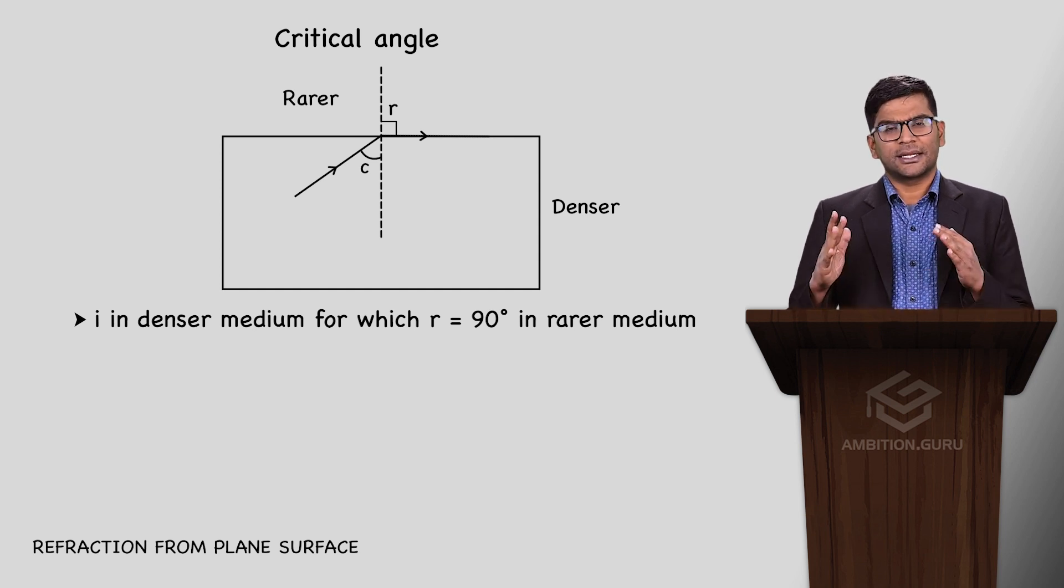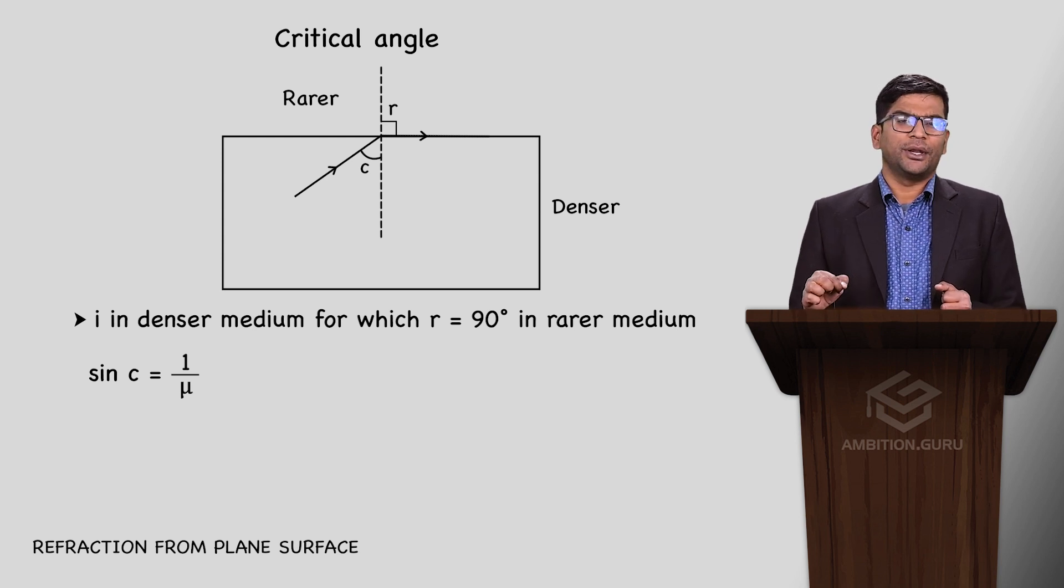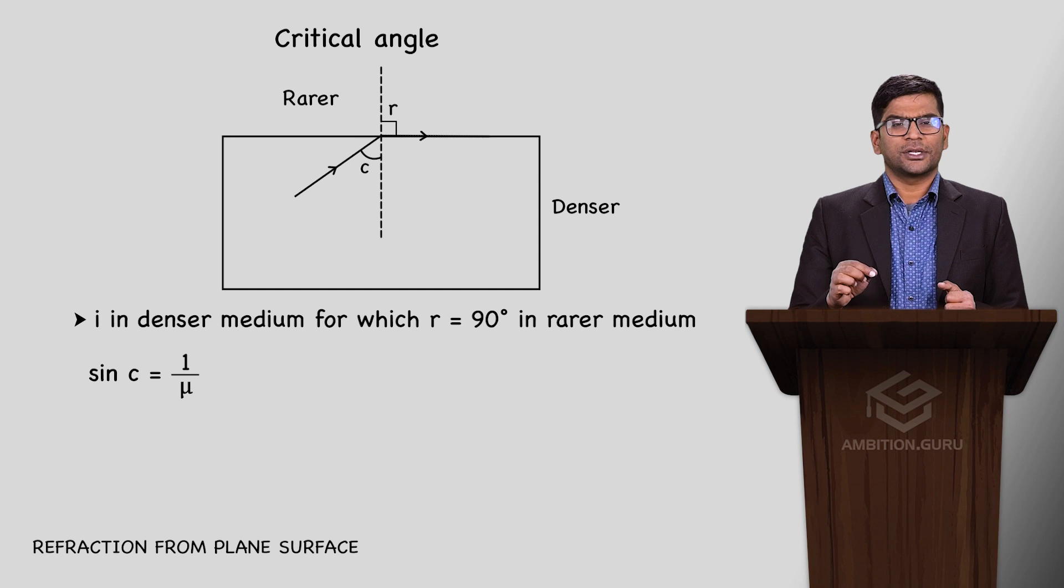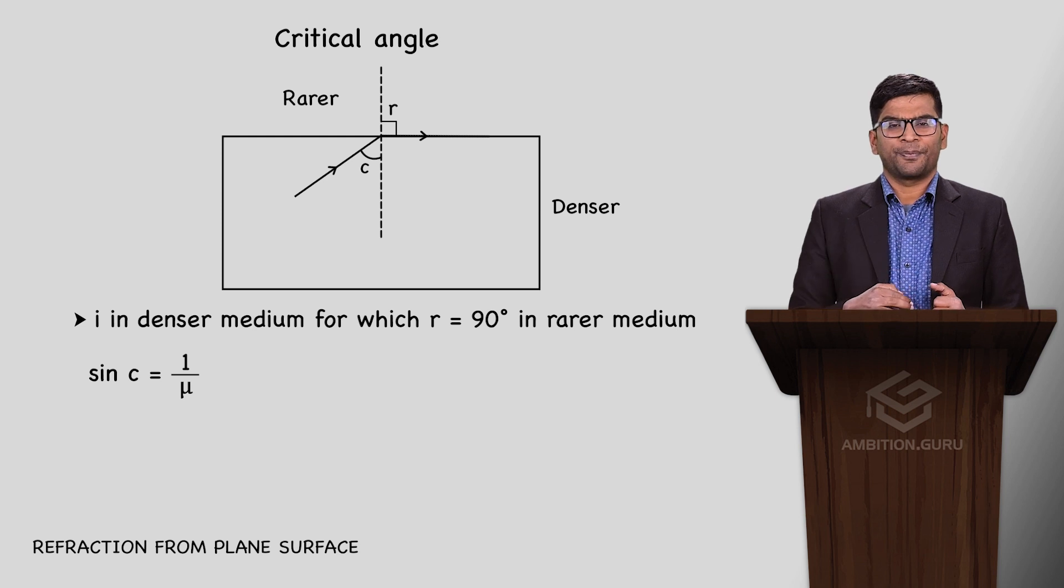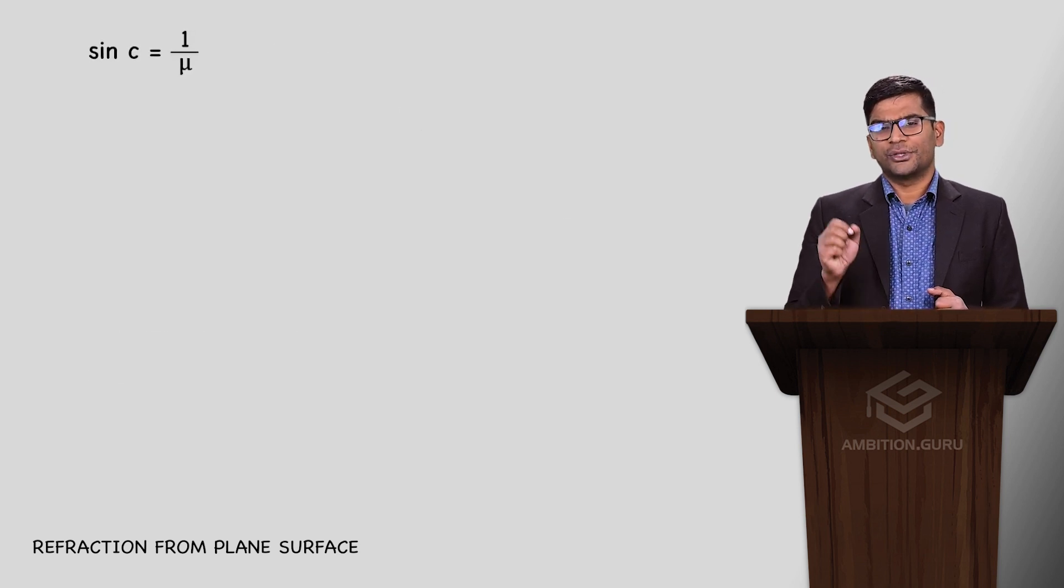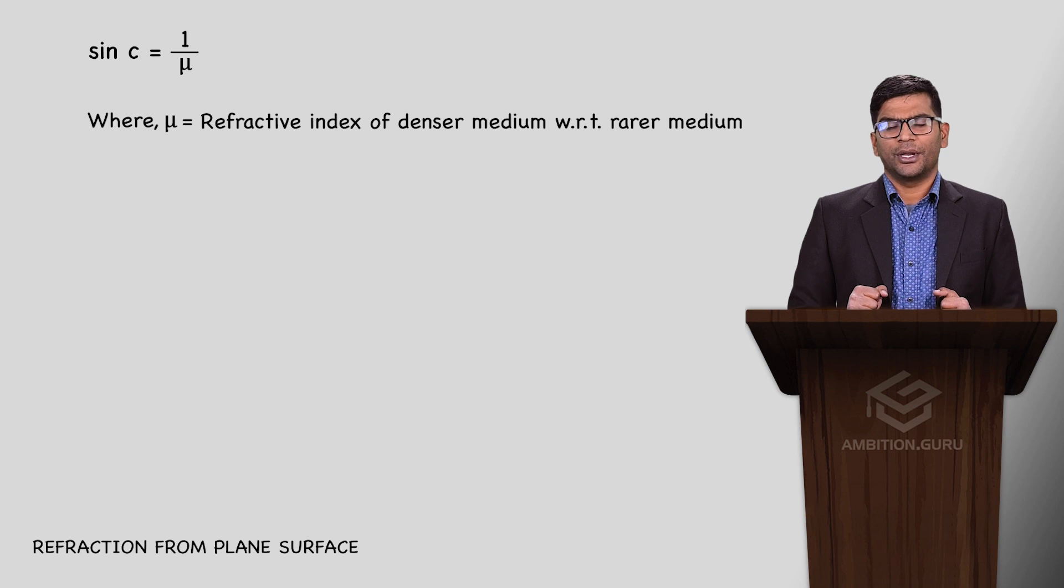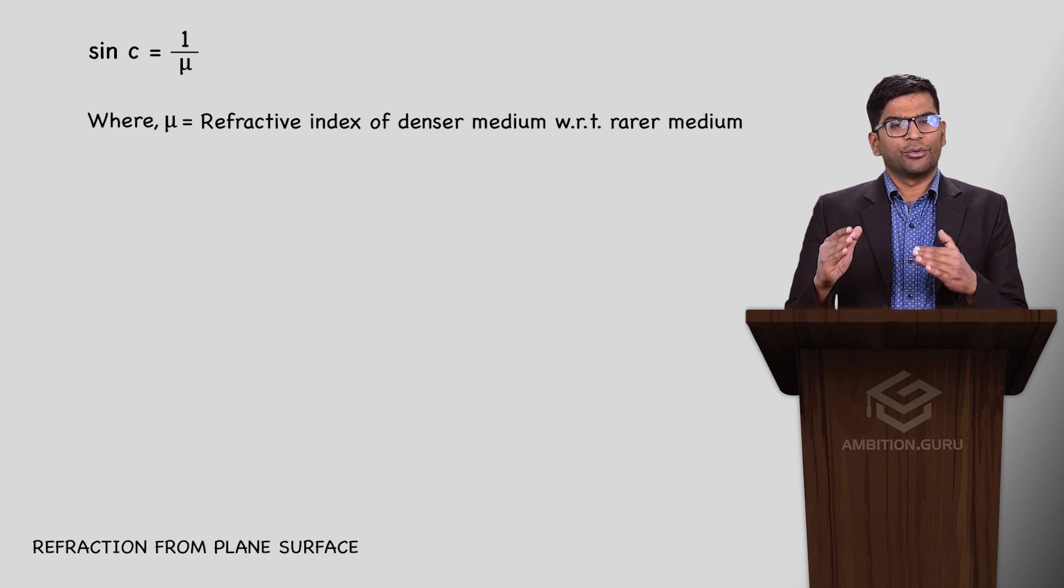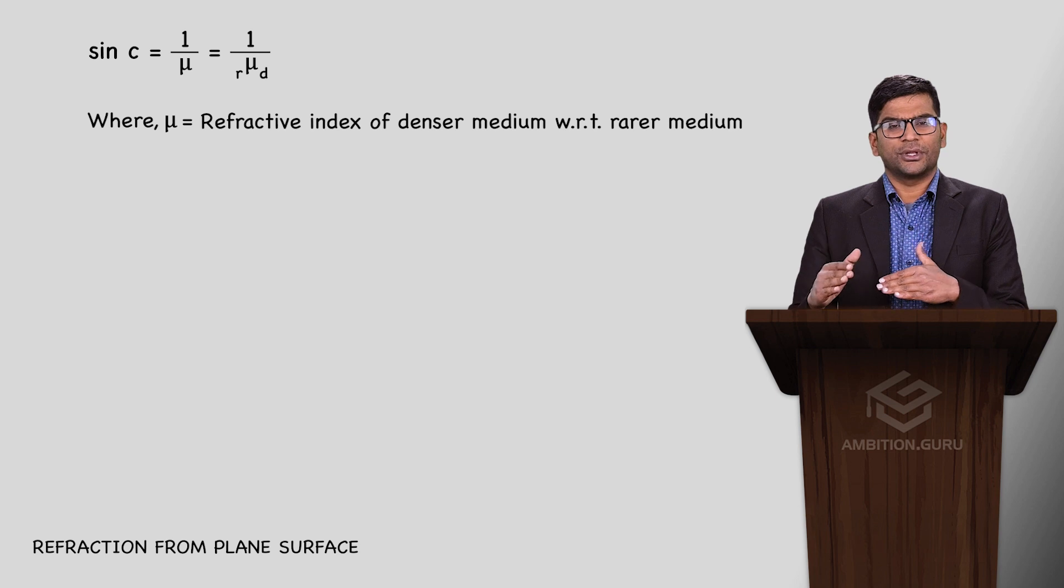Now in this case, what do we have? We'll use Snell's law. Sin c equals 1 by μ. Now we need to define what μ is. In refraction, we have two media - one is rarer, another is denser. We compare the medium whose μ is greater with the one whose μ is less. Hence, sin c equals 1 by refractive index of denser with respect to rarer.